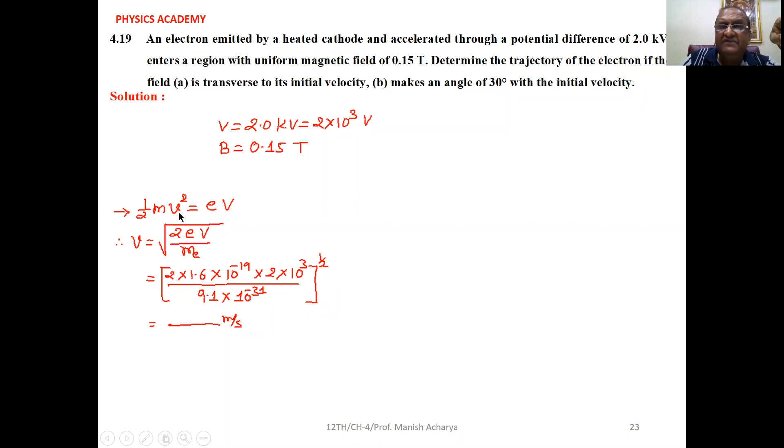That equals half m v squared. If we make v the subject of the equation, then v equals square root of 2eV upon m_e. Substitute the values: e equals 1.6 into 10 raised to minus 19, V equals 2 into 10 raised to 3, upon mass of electron 9.1 into 10 raised to minus 31, whole raised to 1 by 2. Solve this to get the velocity of the particle.